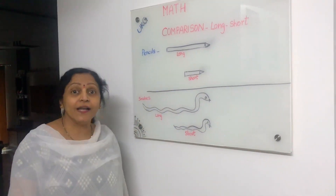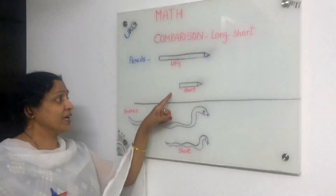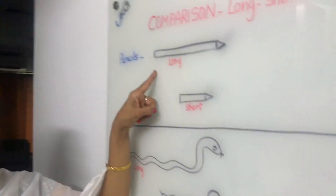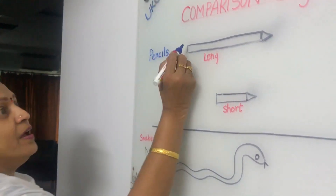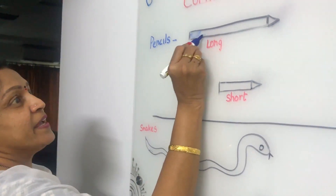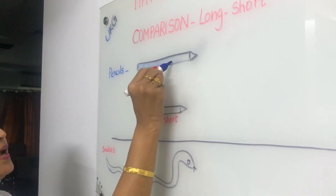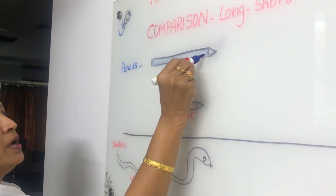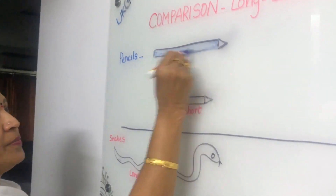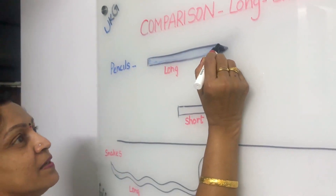Now we have to color the long pencil. Which one is long? Yes, this one. So we identify the long pencil and color it. Take a crayon or sketch pen, whatever you have, and color the long pencil like this.